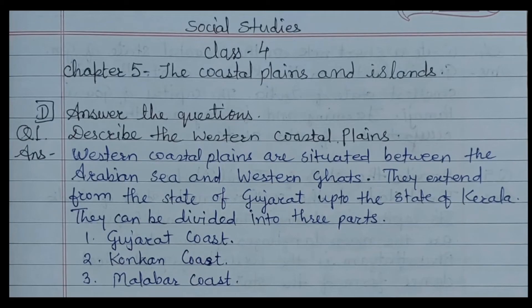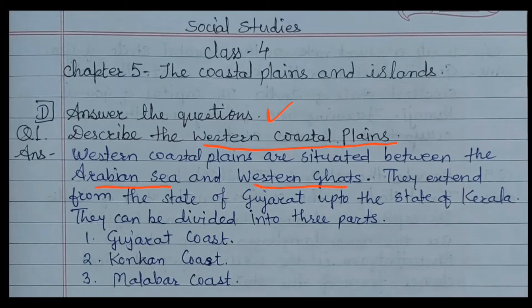Now let's read the question answers of Chapter 5, The Coastal Plains and Islands, Exercise D: Answer These Questions. Question number one: describe the western coastal plains. The answer is: the western coastal plains are situated between the Arabian Sea and the Western Ghats. They extend from the state of Gujarat up to the state of Kerala.